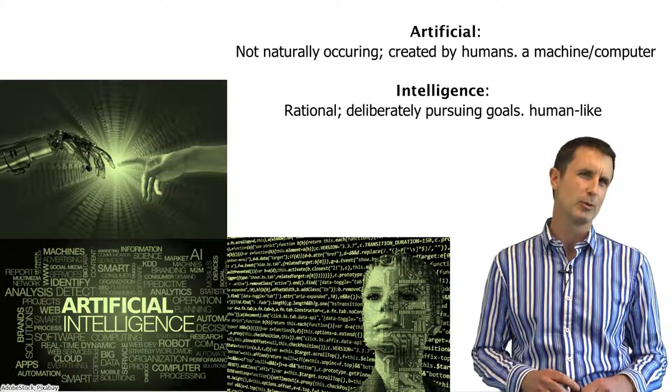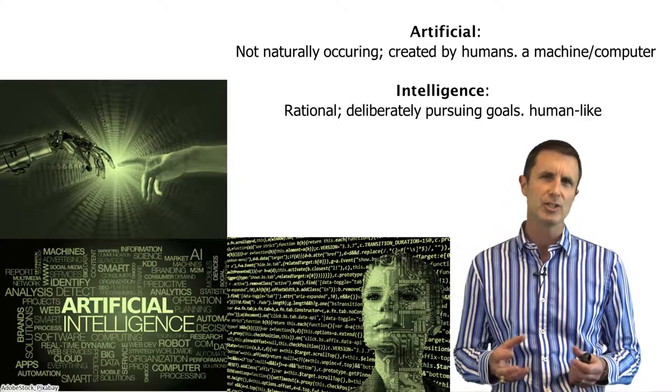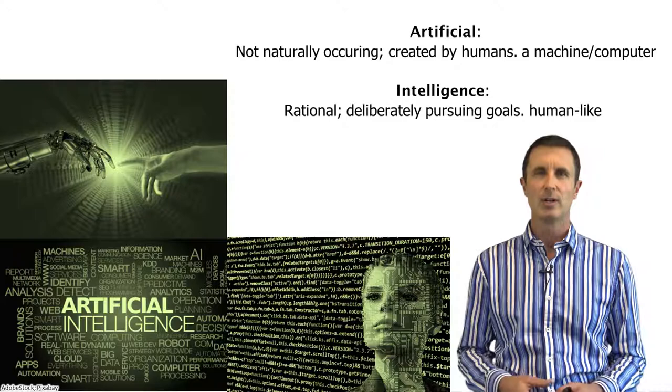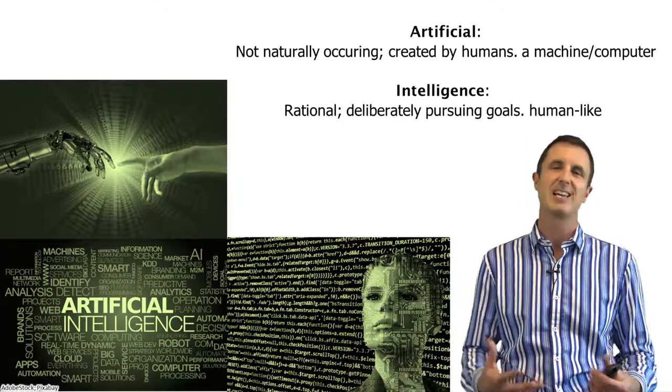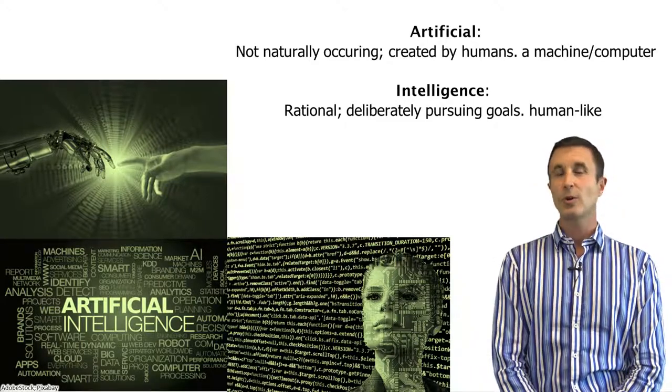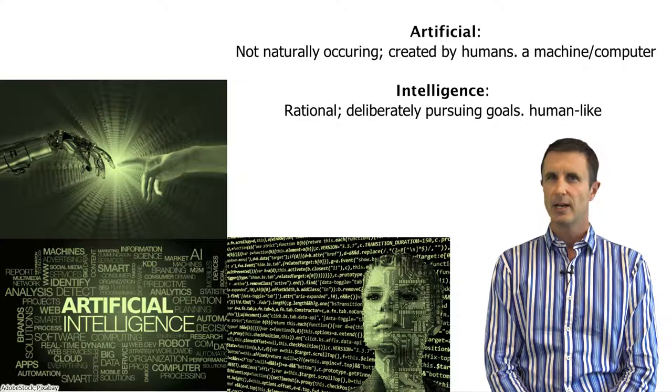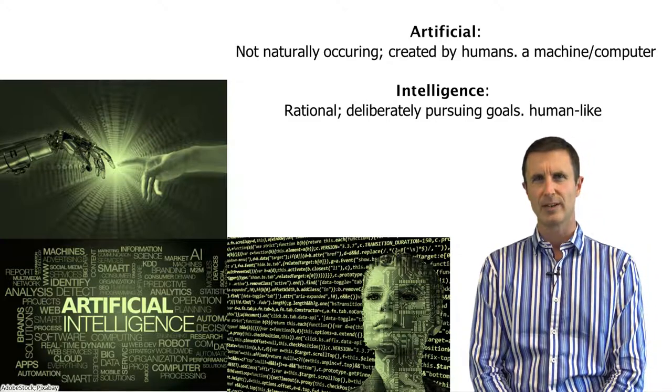And intelligent is actually the more difficult thing to define here. Often when we say intelligence, we mean human-like. We define it by example. We believe that we're intelligent and we define intelligence as like us. But that's a little difficult. So there's a question of whether or not this has to be intelligent in the same way that a human is intelligent.